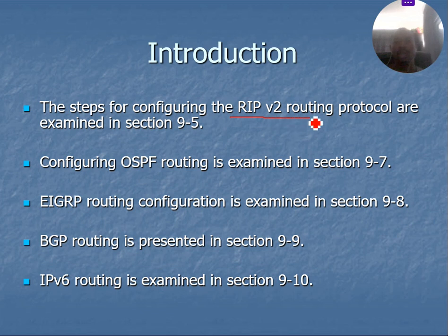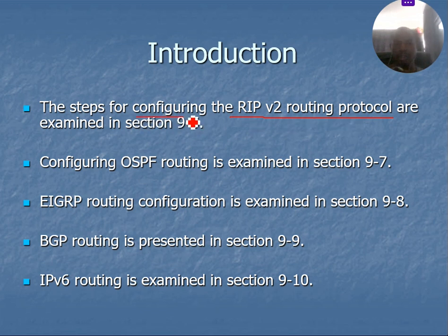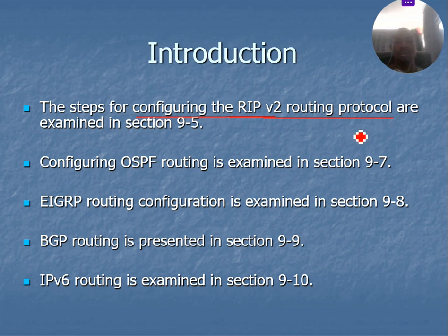After studying the distance vector routing protocol in section four, we move to section five, where we learn the steps for configuring RIP version 2 — the Routing Internet Protocol version 2 — and how to configure a router to route and send data packets using this routing protocol.